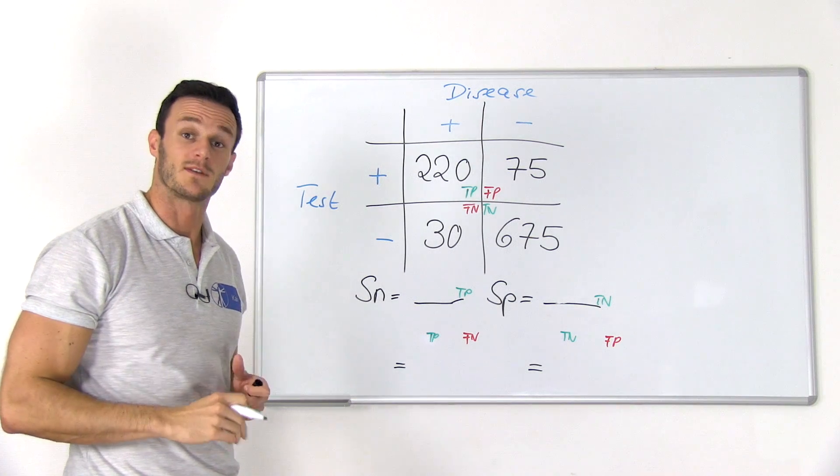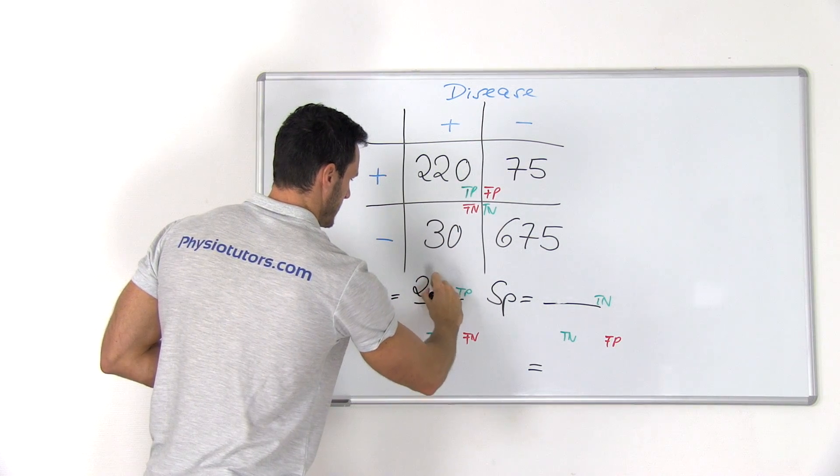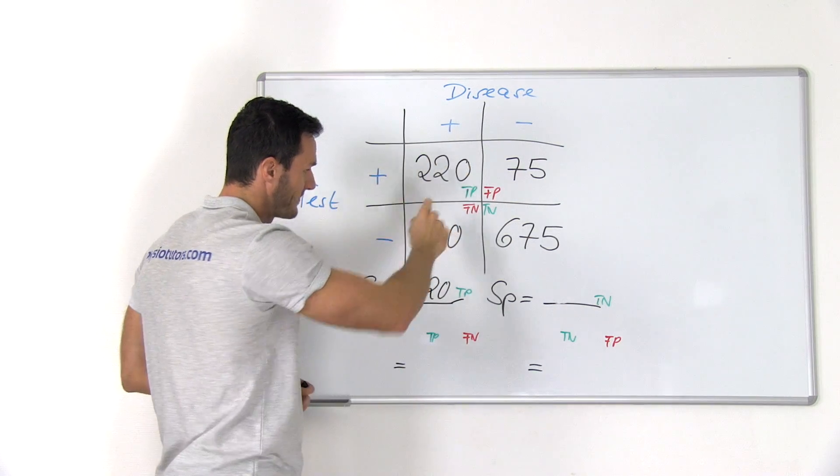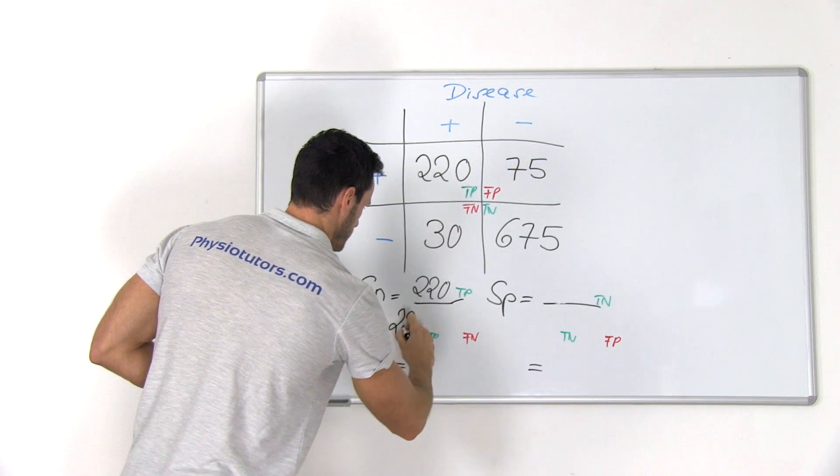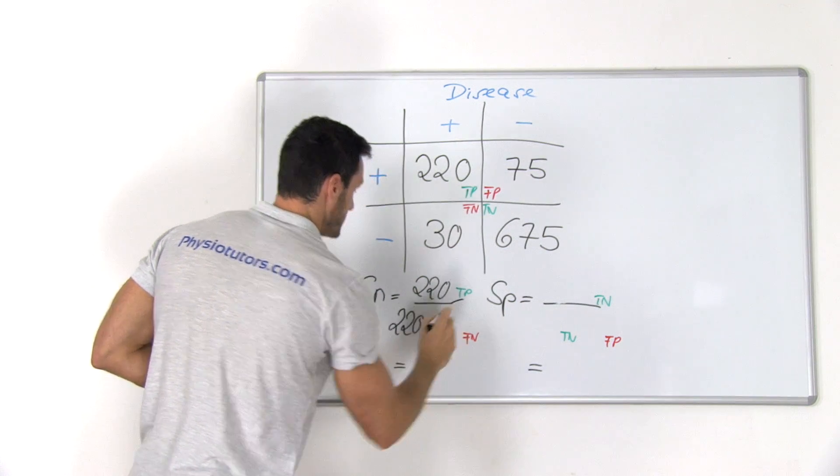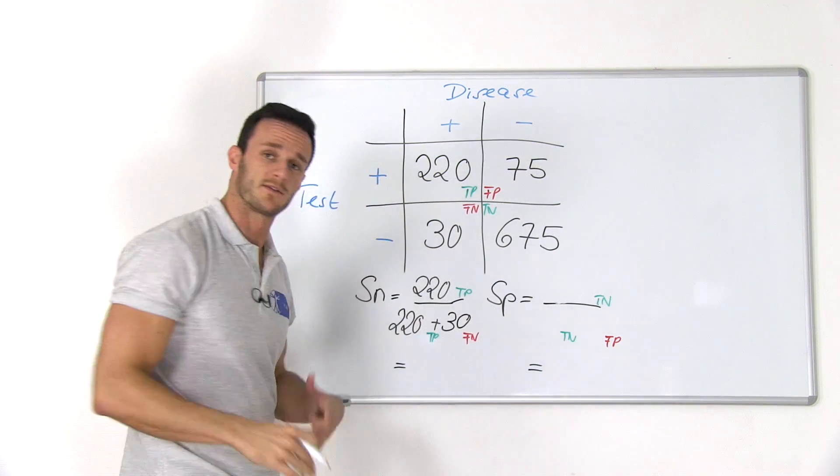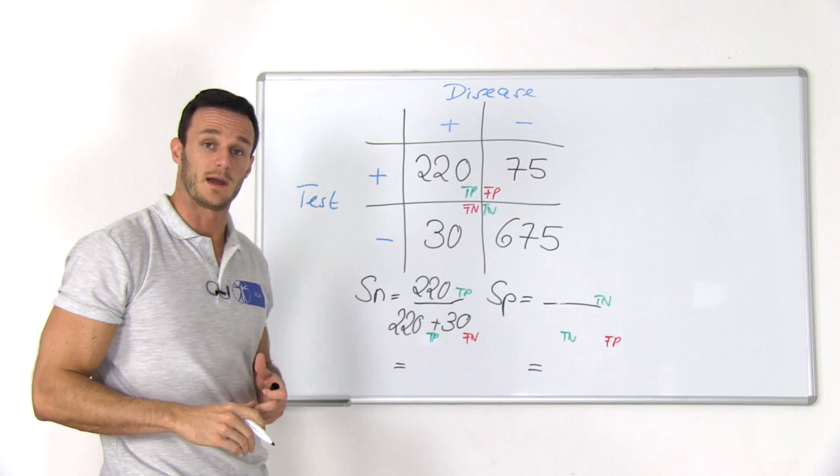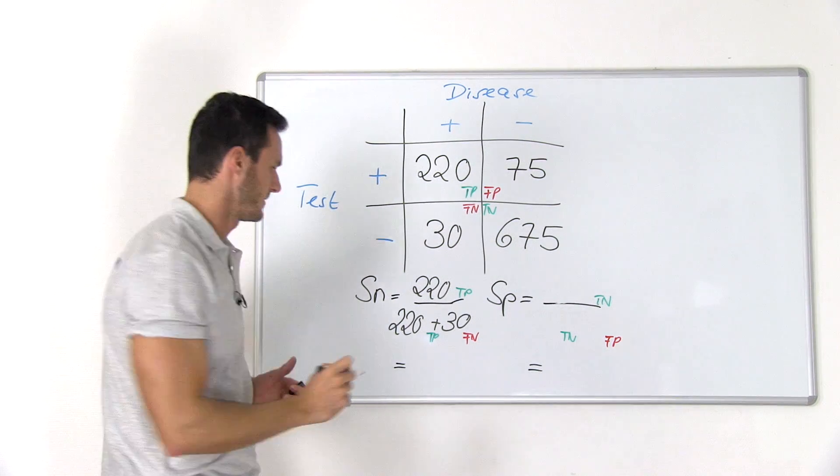we said we have to take all true positives, so 220, and divide them through the whole left column, which is 220 plus all false negatives, so 30. So we have 220 divided by 250, and we end up at 0.88, which is a sensitivity of 88%.